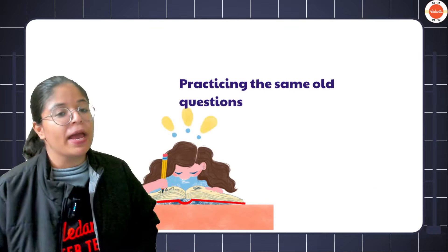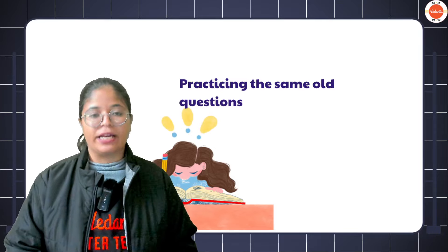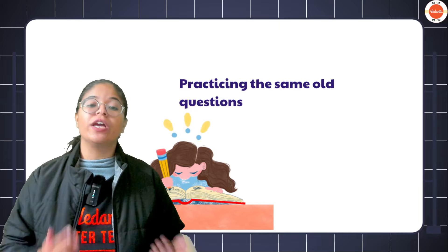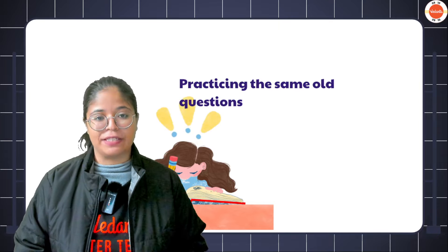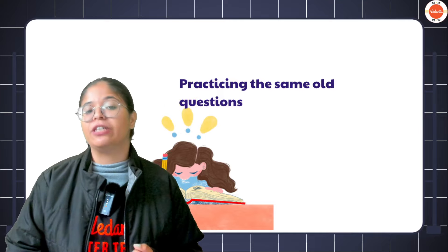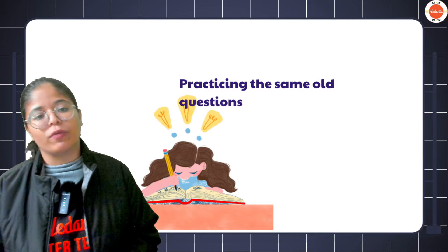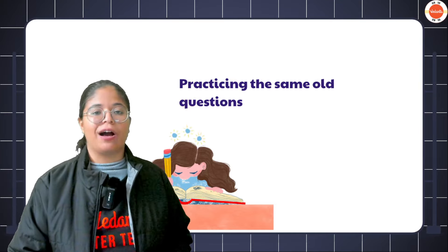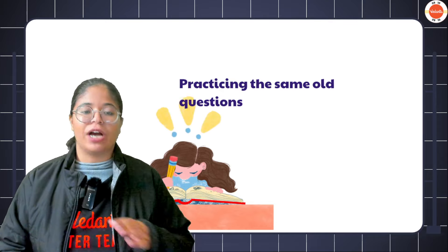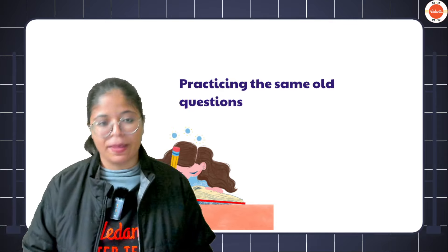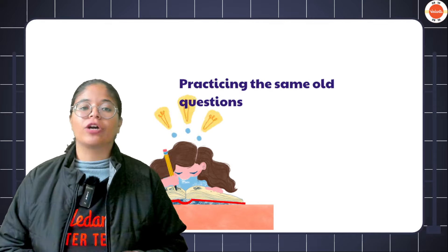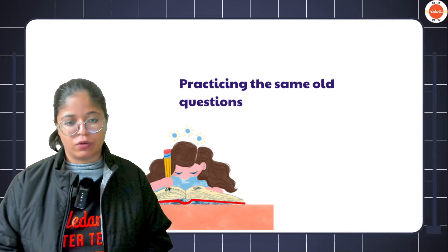Mistake number one: practicing the same old questions. This mistake is often made when students practice the same questions all the time — specifically in the writing section, reading section, and grammar section. Please do not make this mistake. Same old questions can be done in the literature section, but when it comes to the rest of these sections, there is no PYQ or anything that is repeated. You have to attempt the same pattern of questions, but make sure to practice a new set of questions, especially before the exam.